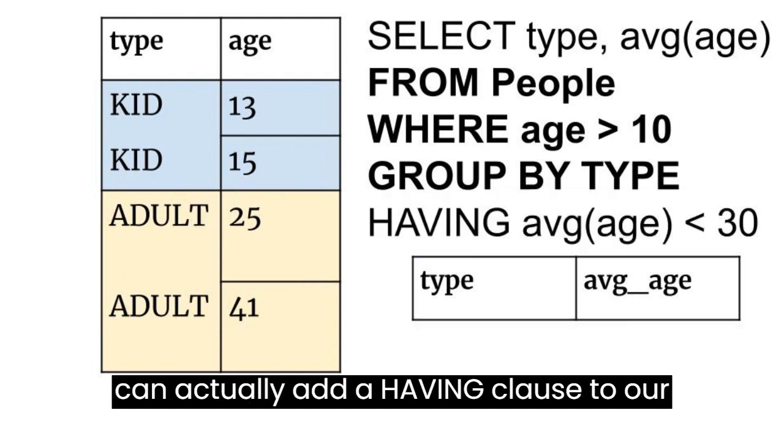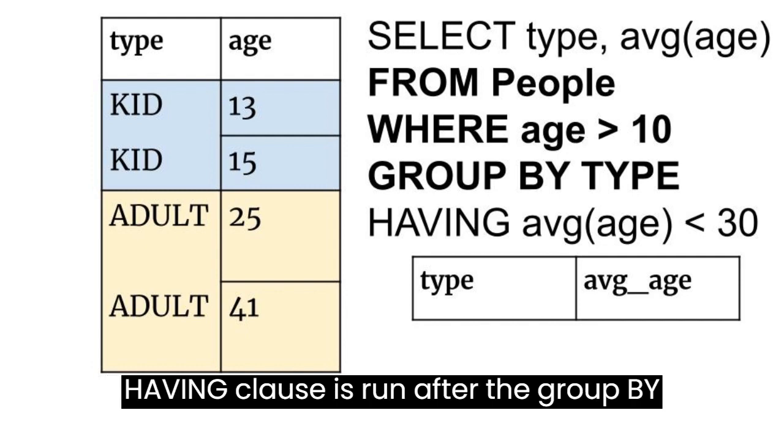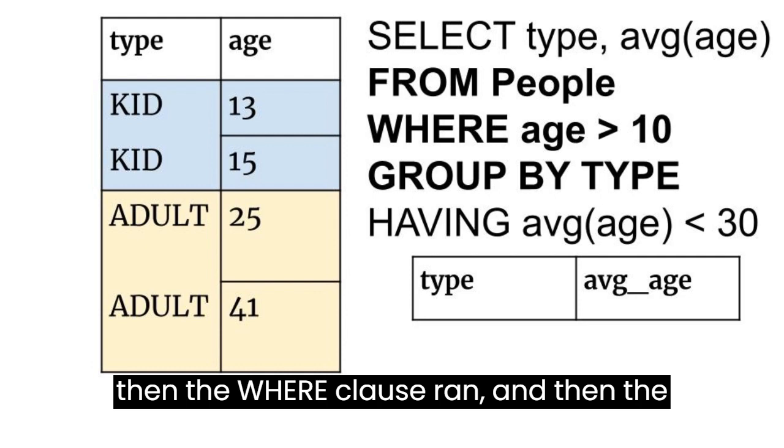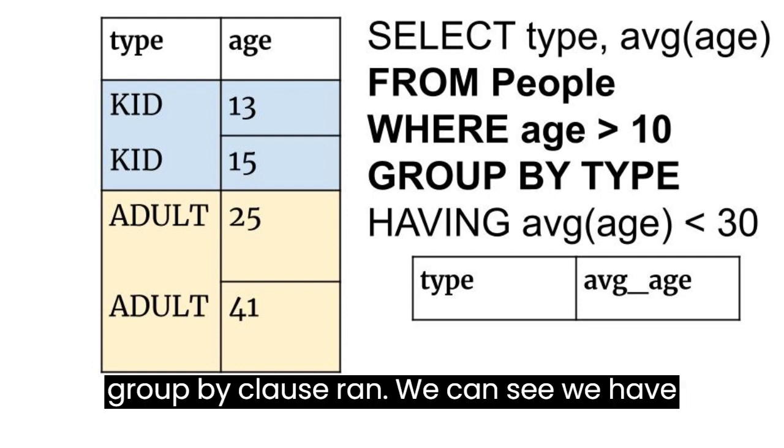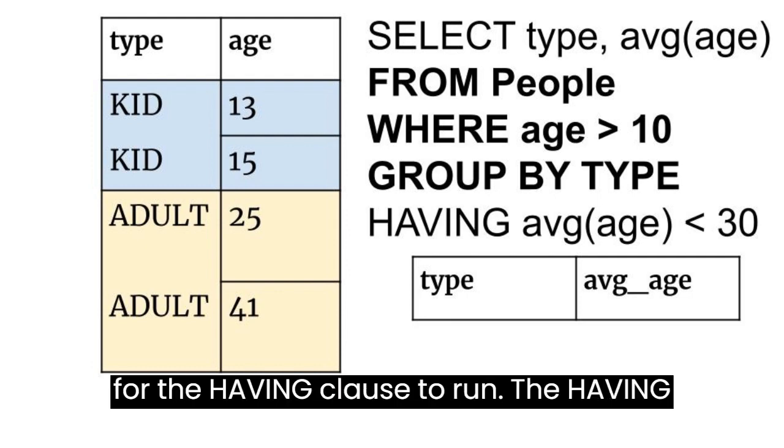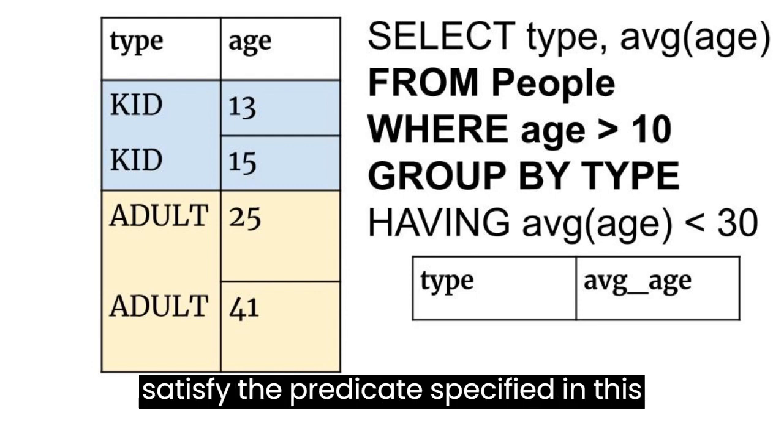We can actually add a having clause to our queries that have a group by clause. The having clause is run after the group by clause. Let's assume the from clause ran, then the where clause ran, and then the group by clause ran. We can see we have two groups based on type. Now it is time for the having clause to run. The having clause filters out groups that don't satisfy the predicate specified.